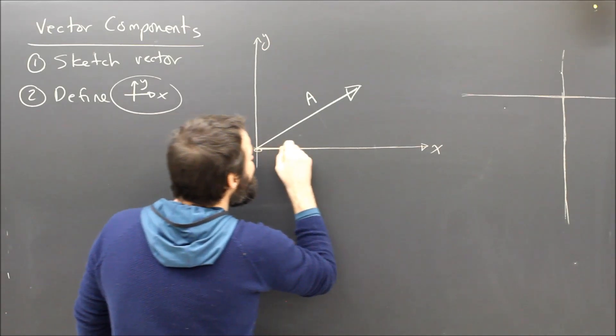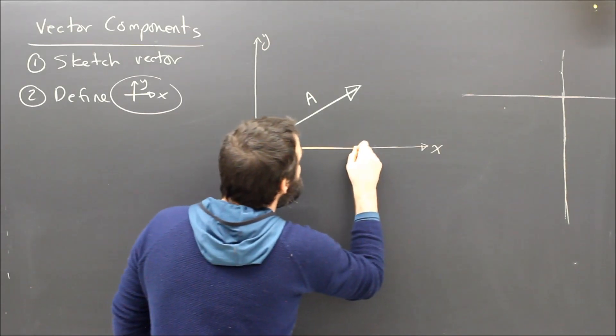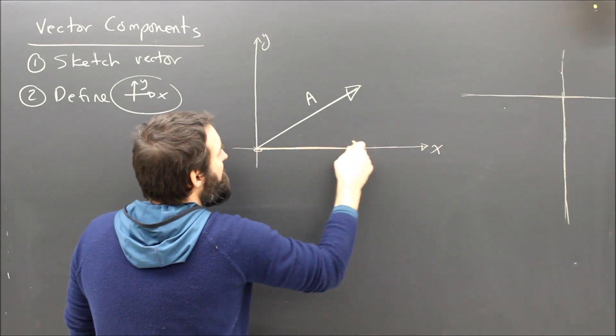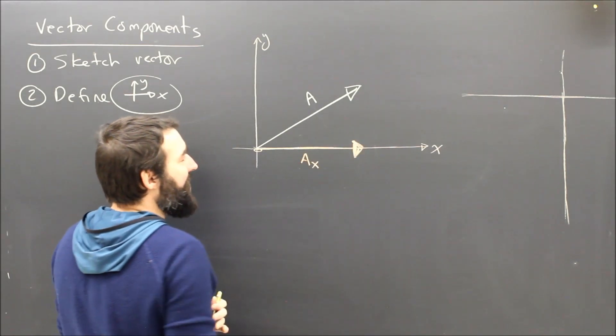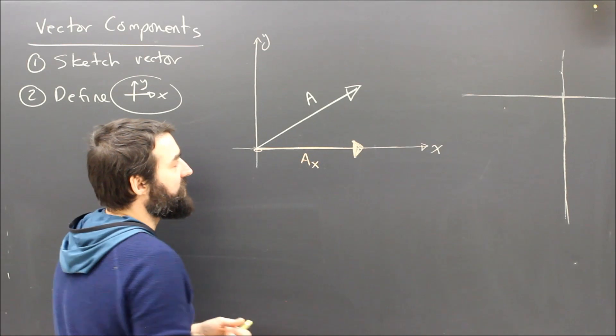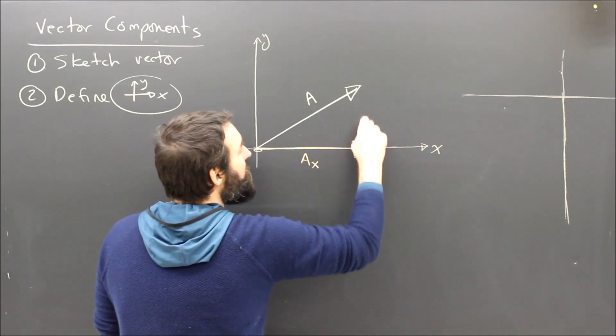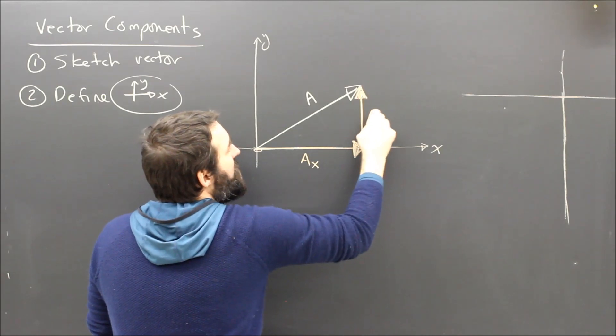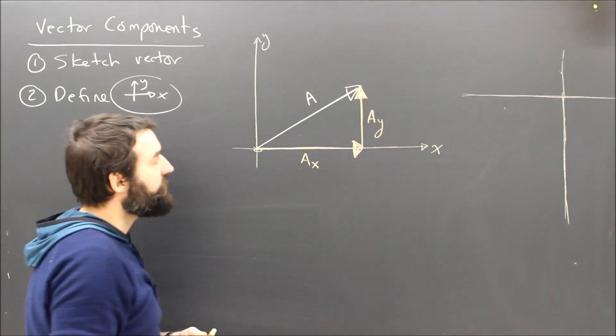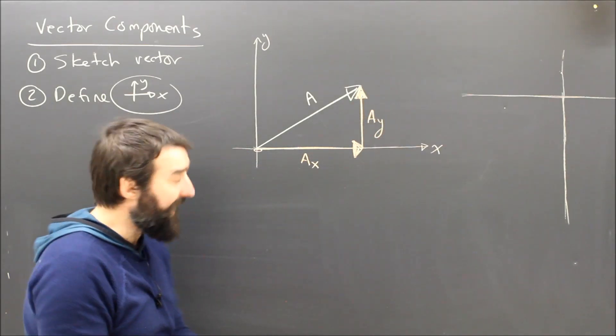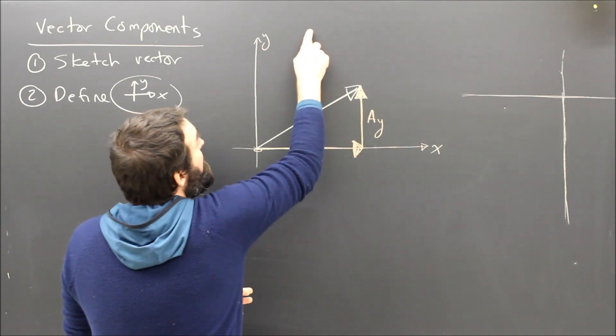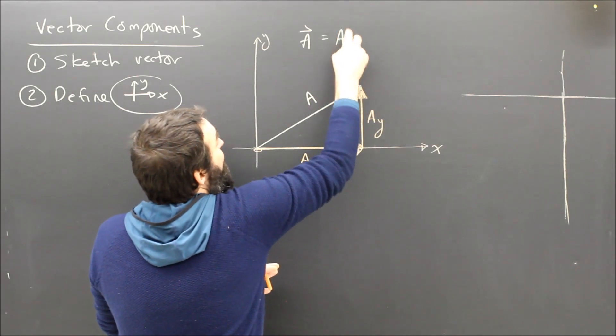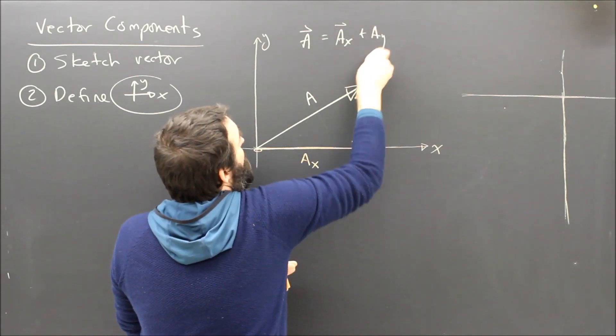And if I do that, I'll break it into an x component, which I'm going to draw here in orange. It's an arrow. I'll fill in my little arrow head, and I'll call it Ax. It's the x component of vector A. And the y component would be up. I'll call that Ay. I hope you remember how to add vectors. You can see that the original vector A is equal to Ax plus Ay.